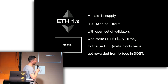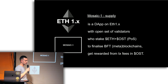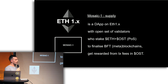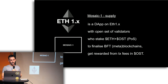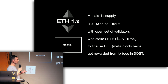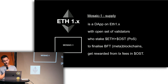What is a blockchain? A blockchain has two parts: a supply side and a demand side because it needs to be in economic equilibrium. The whole point is that no one is doing this for generosity — it's a for-profit motive to run a validator. So on the supply side, Mosaic is a dApp, a set of contracts on Ethereum 1x with an open set of validators. You need to stake ETH and OST to finalize meta blockchains and get rewards from transaction fees in OST.